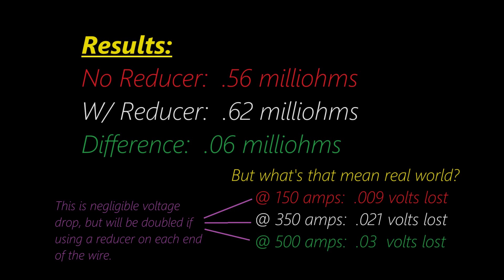we can figure out that at 150 amps, the usage of this reducer would have cost us .009 volts of drop. At 350 amps, .021 volts will be lost. And even at 500 amps, you're talking about a difference of .03 volts.